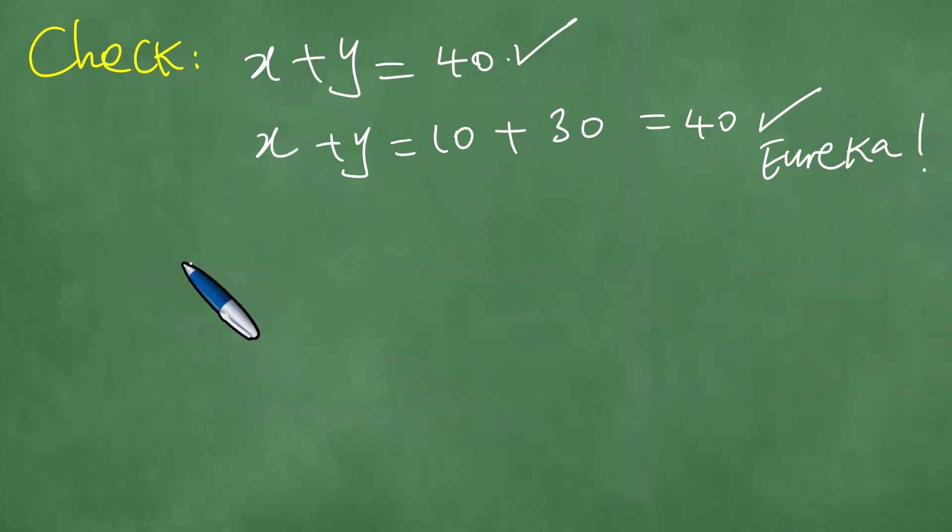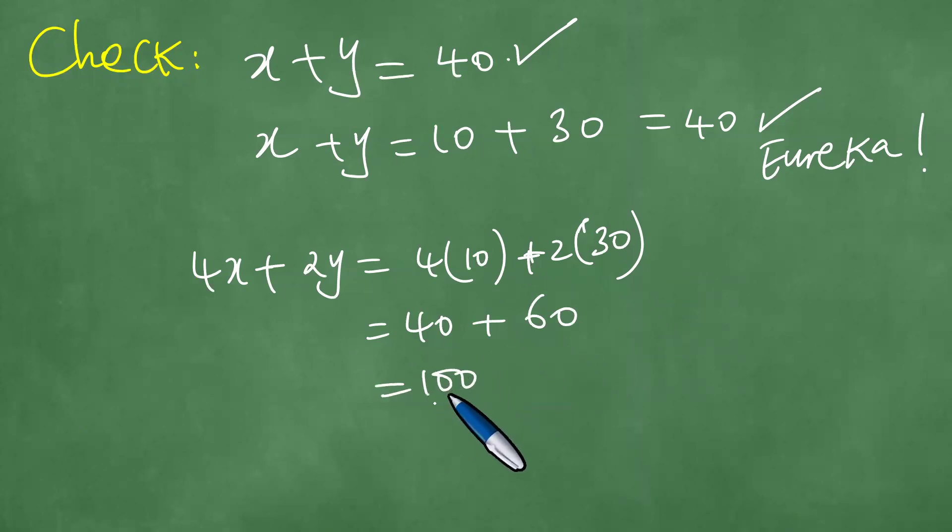Next, we know that one pig has four legs and a chicken has two legs. So 4 times X, which is 10, plus 2 times Y, which is 30. And this is 40 plus 60, which is 100. And therefore, in the end, we agree that obviously Joseph counted 100 legs. And as a consequence, we have confirmed the correctness of the result.